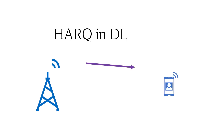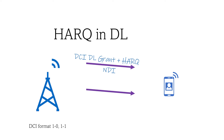In HARQ downlink, the gNB sends downlink scheduling information via DCI with HARQ process information. The NDI, or New Data Indicator, lets you know whether this is a new transmission or a retransmission. If it is a new transmission, it will clear the soft buffer; if it is a retransmission, soft combining will be performed. The gNB then sends the transport block via PDSCH, and the UE reports HARQ ACK or NACK by calculating the checksum. If it is a NACK, the gNB will schedule the retransmission.